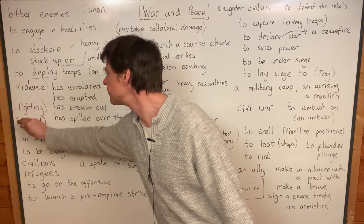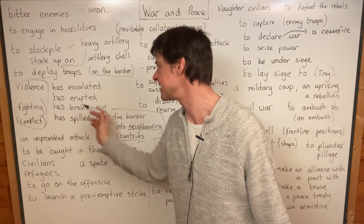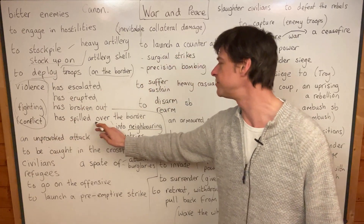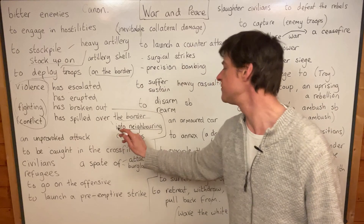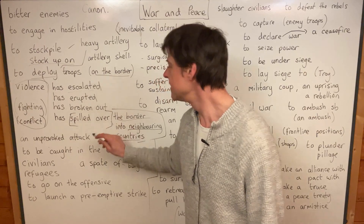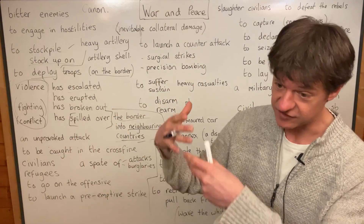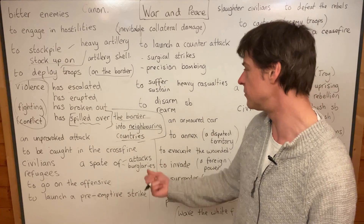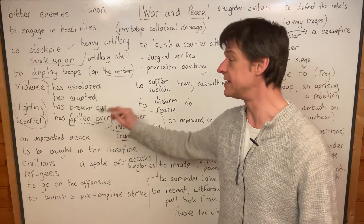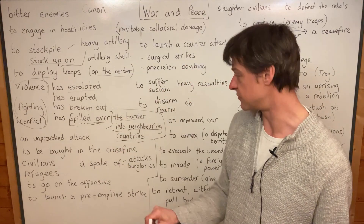Remember, we use all these words with these verbs: violence has escalated, the conflict has escalated, fighting has escalated, violence has erupted, fighting has erupted, fighting has broken out, the conflict has spilled over the border, the conflict has spilled over into neighboring countries. If you want to say that the conflict has moved from one place to another — especially a neighboring place — we use 'spill over.' Notice: spilled over the border, but spilled over into neighboring countries.